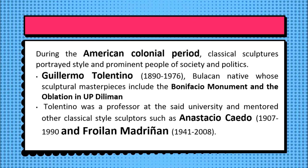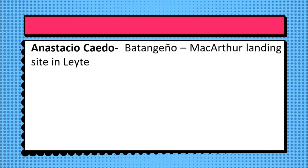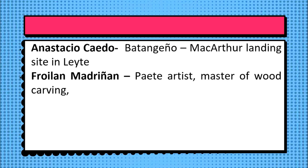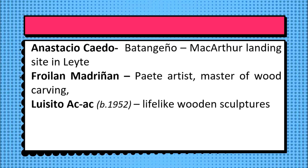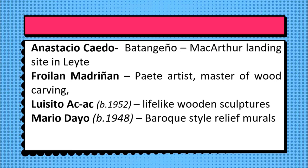Tolentino was a professor who mentored other classical style sculptors such as Anastacio Caedo (1907–1990) and Froylan Macapagal (1941–2008). Caedo was a Batangueño whose most recognizable work was the memorial at the MacArthur Landing Site in Leyte. Froylan Macapagal was a Paete artist who was a master in wood carving and a great influence to many aspiring artists of Paete, mentoring contemporary artists like Luisito Acta, famous for his lifelike wooden sculptures, and Mario Dayo, known for his baroque-style murals.